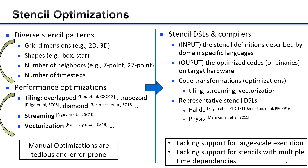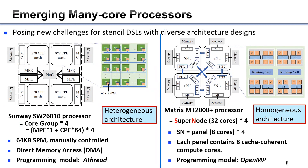These DSLs take the stencil definitions as input and generate optimized codes on target hardware as output, performing many optimizations during that process. Halide and Physis are representative stencil DSLs. However, most of them lack support for large-scale execution and fail to support stencils with multiple time-step dependencies. Additionally, emerging many-core processors pose new challenges for stencil DSLs due to diverse architecture designs.